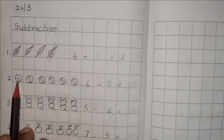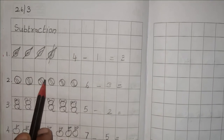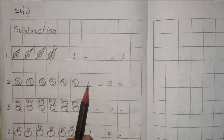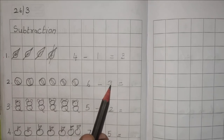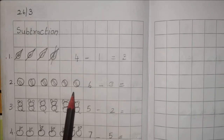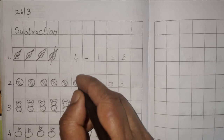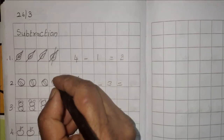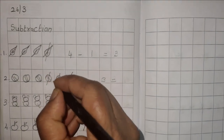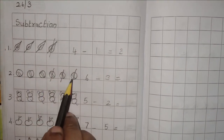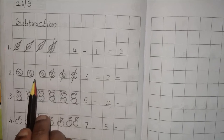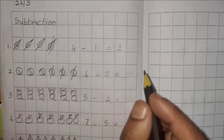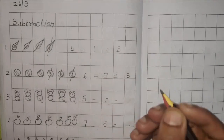Second one: how many balls are there here? 1, 2, 3, 4, 5, 6 — six balls. Six minus three. We are going to take three balls from this — put a small slanting line, start from the right side, cancel from the right side: 1, 2, 3. How many balls are left over? 1, 2, 3. So the answer is three.